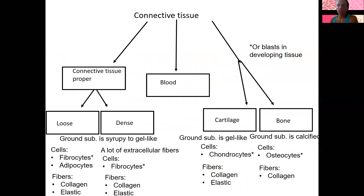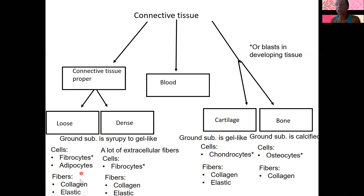Here's one more flowchart that breaks apart connective tissues into the same categories. Supporting connective tissues are on one side, broken up into general categories of ground substance and cell types. The ground substance of connective tissue proper is syrupy to gel-like. Cartilage is gel-like, and bone is calcified. For cells: connective tissue proper has fibrocytes primarily, plus adipocytes for loose connective tissue, with collagen and elastic fibers. For cartilage and bone, we've got chondrocytes and osteocytes respectively, with the same fiber types — however, there are no elastic fibers in any type of bone. Note that blasts — chondroblasts and osteoblasts — are for developing tissue that is actively producing its matrix.